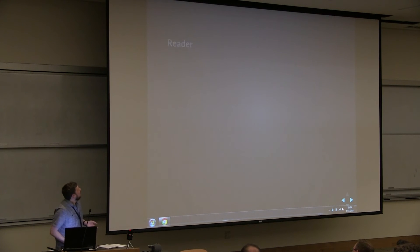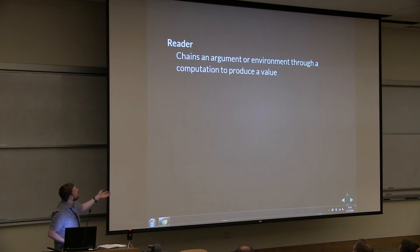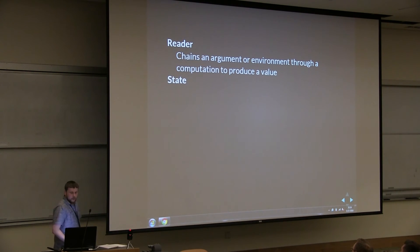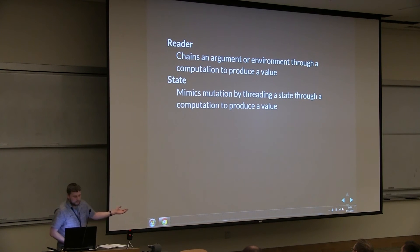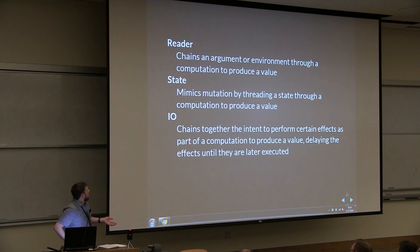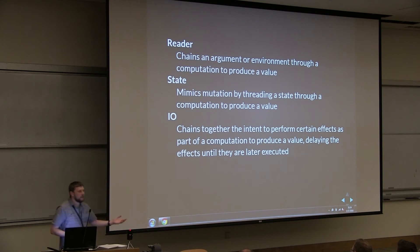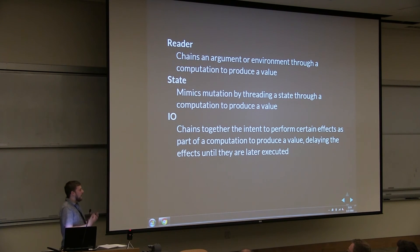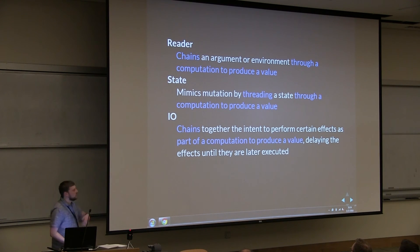What you want to do is aim for concrete examples. Point out: 'this is a Reader — it chains an argument or an environment through a computation to produce a value.' State mimics mutation by threading state through a computation to produce a value. IO chains together the intent to perform certain effects as part of a computation, delaying those effects until they're later executed. As you point out more of these concrete actual implementations of the monad pattern, a pattern starts to emerge.